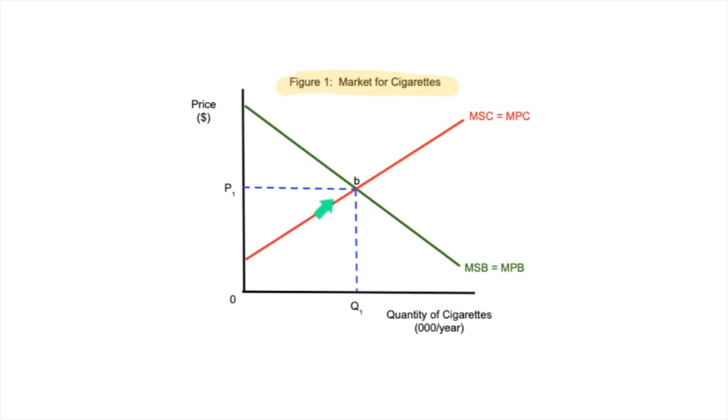So actually, my private benefit is actually higher than the marginal social benefits. Like I benefit more at that table than everybody else because I'm smoking the cigarette. Everyone else just sort of suffers, right, just sort of suffers.